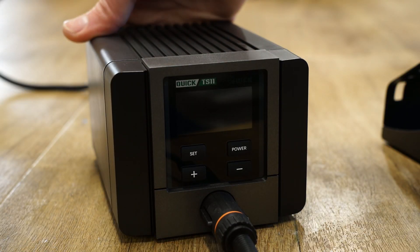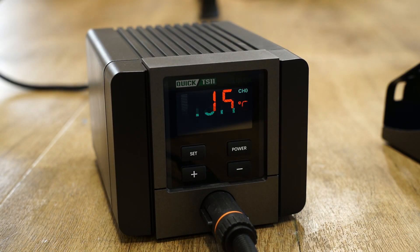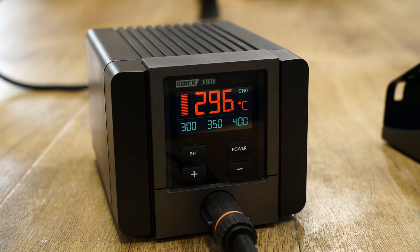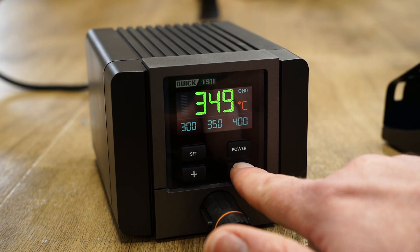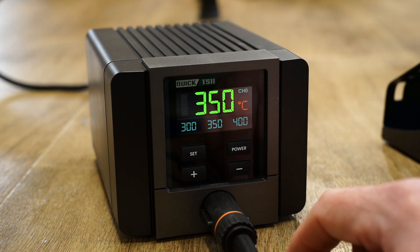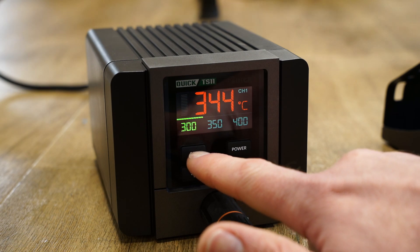Switching the TS-11 on for the first time we can see the iron heats up in a matter of a couple of seconds. To change the temperature you can use the plus and minus buttons, or use the set button to cycle through the three customizable preset temperatures.